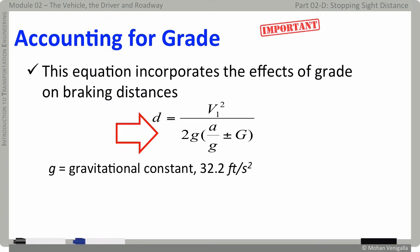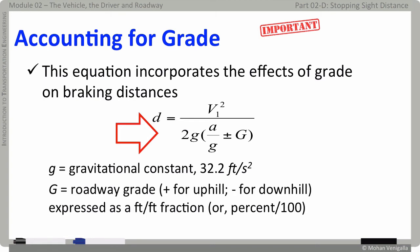In here, lowercase g is the gravitational constant for which we normally use a value of 32.2 feet per second squared. The other g which is capital G represents roadway gradient or a fraction. Use positive value for uphill and negative value for downhill.